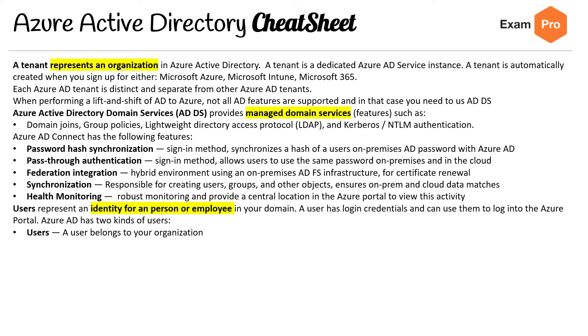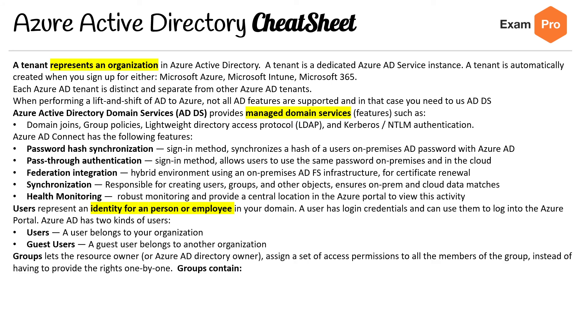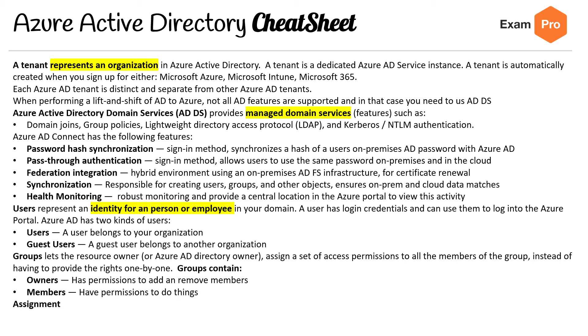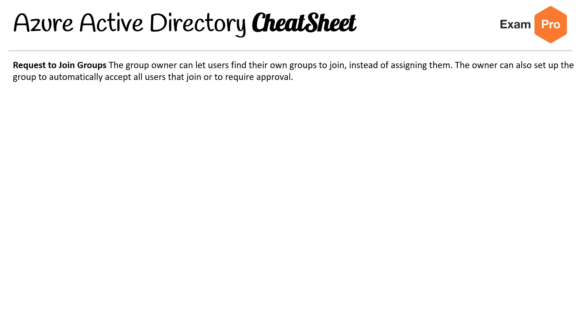Azure AD has two kinds of users: a user that belongs to your organization, and guest users — a user that belongs to a different organization. Groups let resource owners assign a set of access permissions to all members of the group instead of providing rights one by one. A group contains owners and members. You can assign roles directly to a group, and you can assign applications directly to a group. The group owner can let users find and join their own group, or set the group to automatically accept all users or require approval to join.